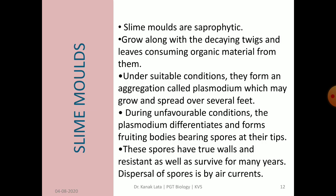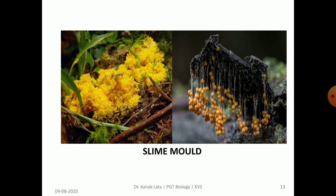Next is about slime molds, which are saprophytic — they grow along with decaying twigs and leaves and consume organic matter present in them. Under suitable conditions, they form an aggregation called plasmodium, which may grow and spread over several feet. During unfavorable situations, the plasmodium differentiates and forms fruiting bodies that bear spores at their tips. These spores have true walls and are resistant, so they survive for many years. Spores are dispersed by air currents. Here you can see the growth of slime mold and fruiting body.